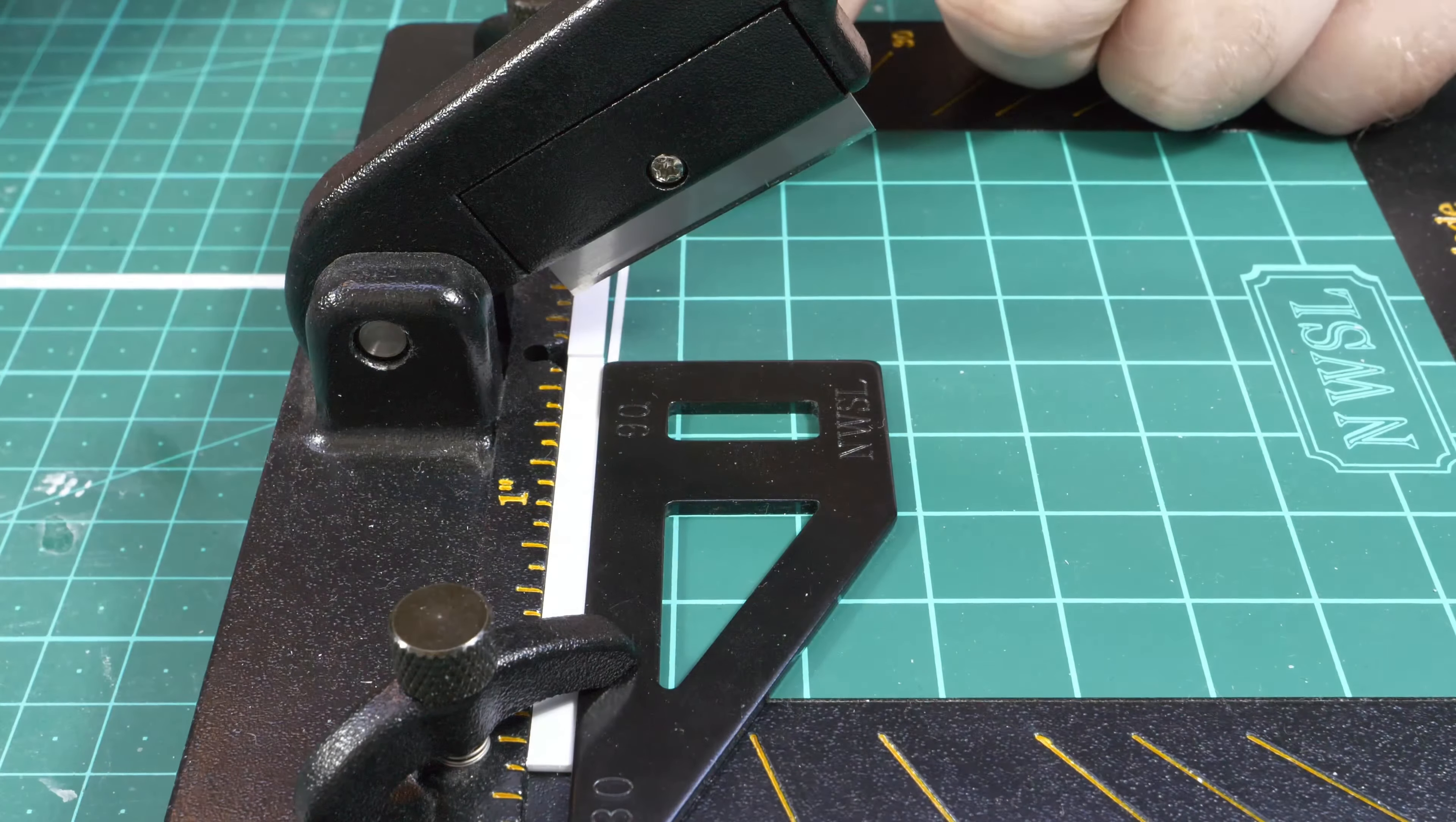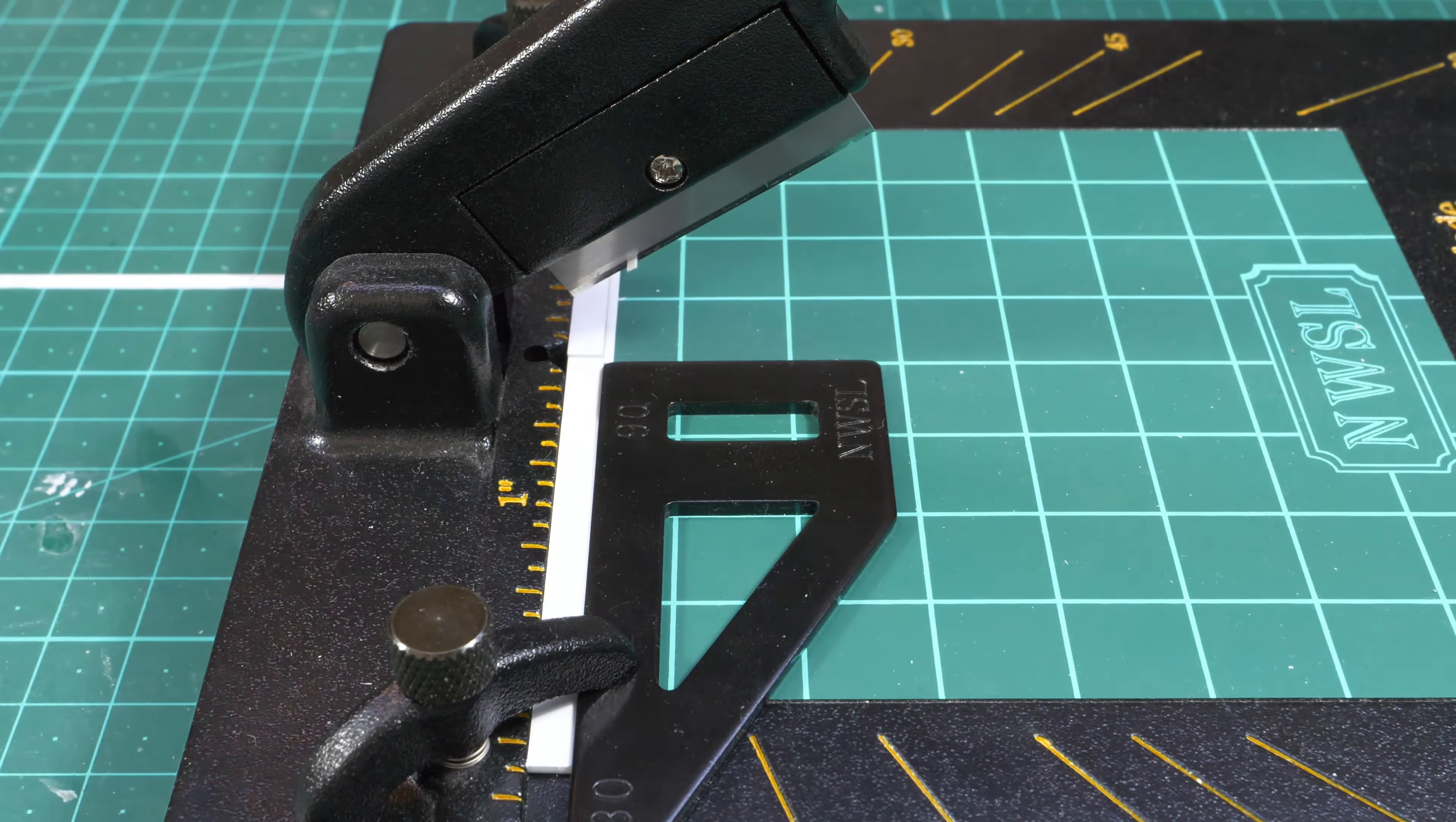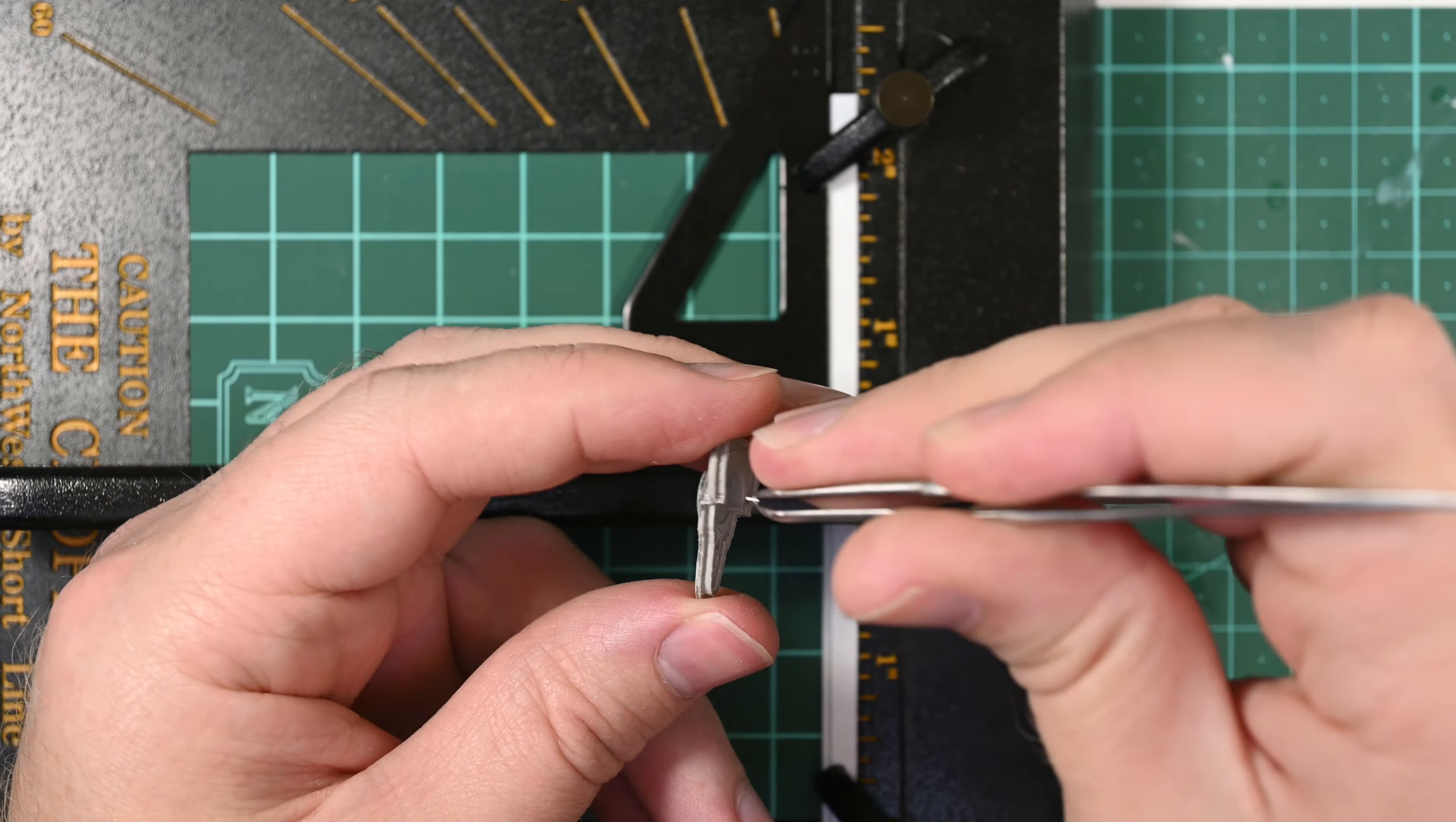After digging out the groove, I then move on to cutting the pieces of styrene stock that are going to form the replacement frames. Here I'm not too concerned about getting the size precisely correct. They just need to be slightly larger than what is required, because once installed I can then sand them to fit.